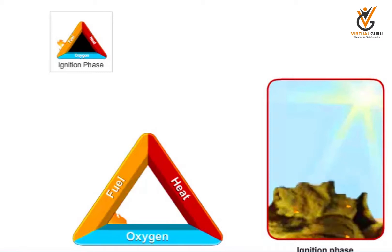Spontaneous ignition occurs when certain materials become warm during oxidation, producing more heat, which accelerates the oxidation process. In the ignition or incipient phase, heat flows back to the material due to radiation, resulting in a chain reaction enabling the components to sustain fire.